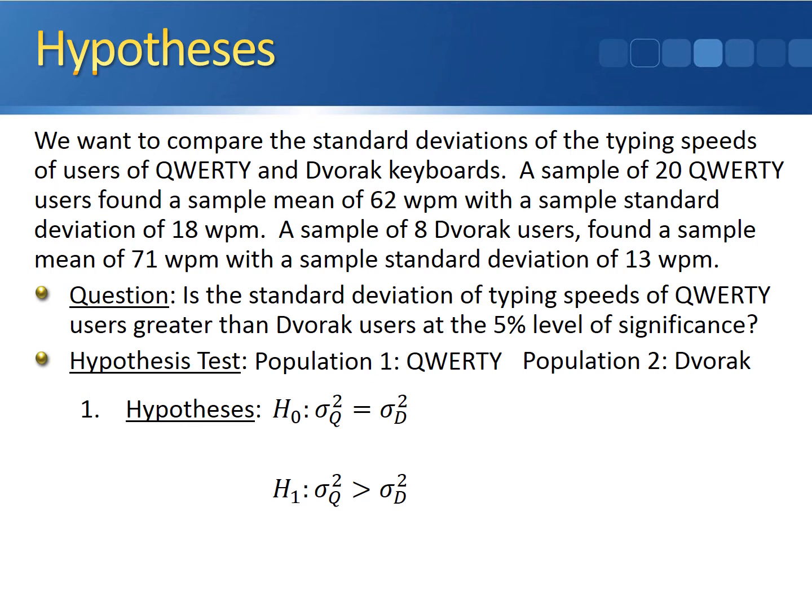Notice that there is no hypothesized ratio stated directly in the hypotheses. We can't subtract one variance from the other because we're not interested in the difference — we want to know how many times larger one variance is compared to the other. Dividing each side by the variance of the Dvorak typing speed gives us: the null hypothesis is that the ratio σ²_QWERTY / σ²_Dvorak equals 1, and the alternative hypothesis is that this ratio is greater than 1.